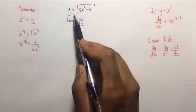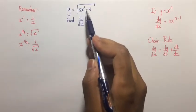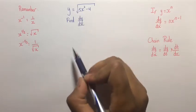Here we are given that y is equal to the square root of 5x squared minus 4, and we are required to find dy/dx.